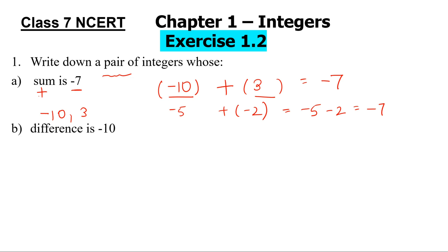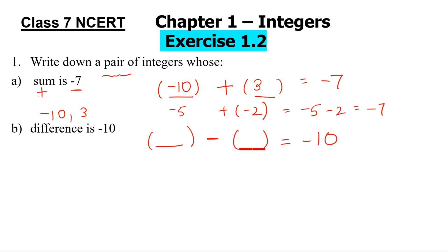Next one: difference is minus 10. Difference means minus. So blank minus blank equals minus 10. Let's think what numbers we can put in these blanks to get minus 10. One option could be 10 minus 20, which gives minus 10. Or we can put minus 6 minus 4, which also equals minus 10. Let's take the first option: 10 comma 20, since 10 minus 20 is minus 10.